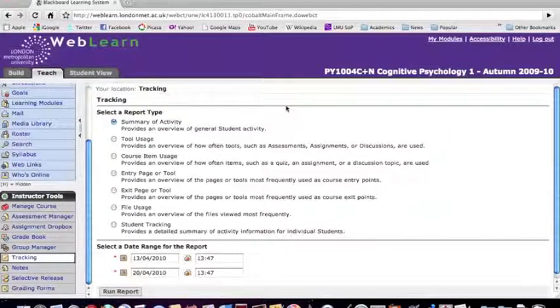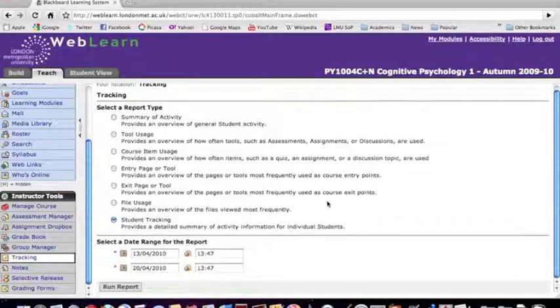And within tracking there are various options, most of these give you a summary across students. But to look at what individual students are doing you need to select the last of these, student tracking. And then below that you need to select a date range that you're interested in.